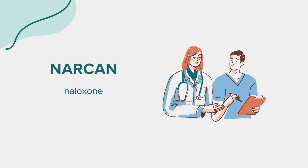While Narcan is life-saving when used to reverse opioid overdoses, it may induce withdrawal symptoms in opioid-dependent individuals. These symptoms can include body aches, fever, sweating, runny nose, sneezing, goose bumps, yawning, weakness, anxiety, nausea, vomiting, diarrhea, shivering or trembling, rapid heart rate, and increased blood pressure. Severe side effects are rare but can include pulmonary edema or cardiac arrest, typically as a result of the underlying opioid toxicity rather than a direct effect of naloxone.